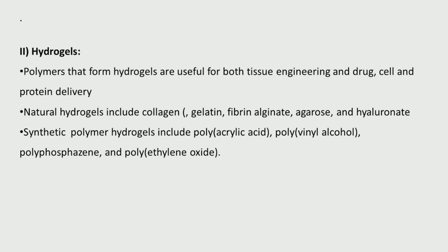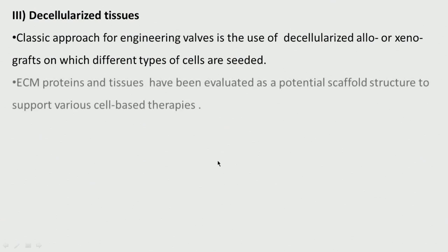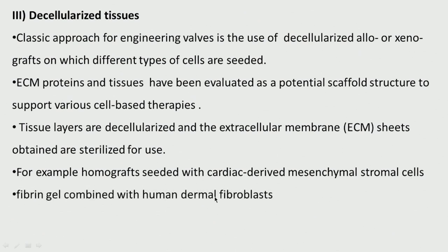Hydrogels — using polymers that form hydrogels — include natural hydrogels like gelatin, fibrin, alginate, agarose, and hyaluronate, and synthetic polymer-based hydrogels like polyacrylic acid and polyvinyl alcohol. Decellularized tissues are another approach: allo- or xenografts are decellularized and cells are seeded on top. ECM proteins and tissues have been evaluated as potential scaffolds. Homografts seeded with cardiac-derived mesenchymal stromal cells and fibrin gel combined with human dermal fibroblasts are examples of different approaches.